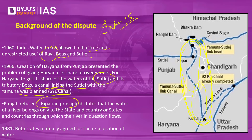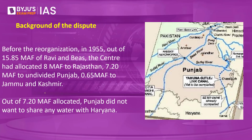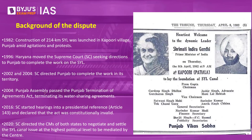Haryana did not accept this. After extensive negotiations through the 1970s, in 1981 both states agreed to a reallocation of water. Punjab agreed as well, and in 1982, construction of the canal began from a place called Kapuri village in Punjab.